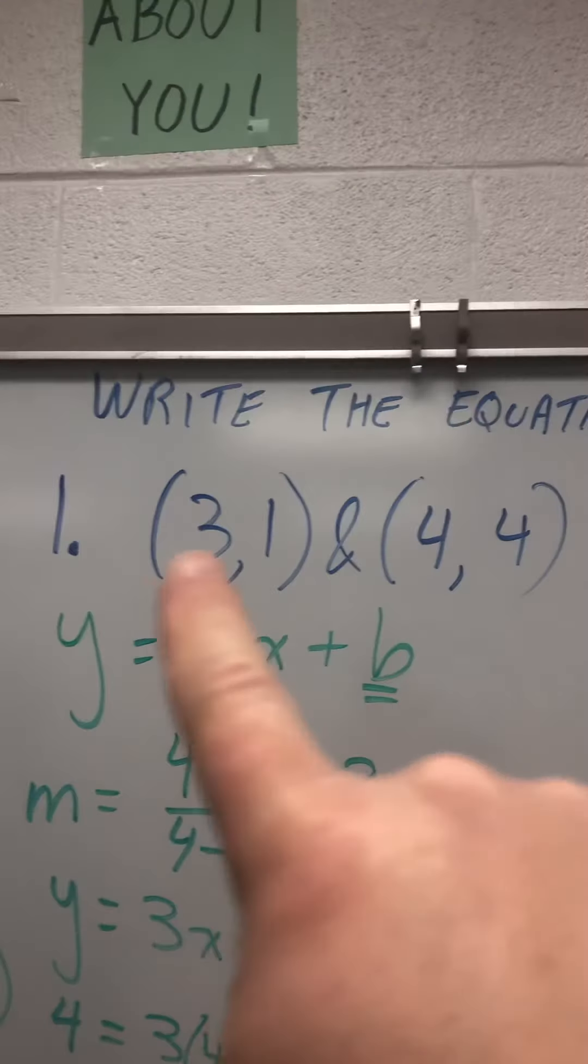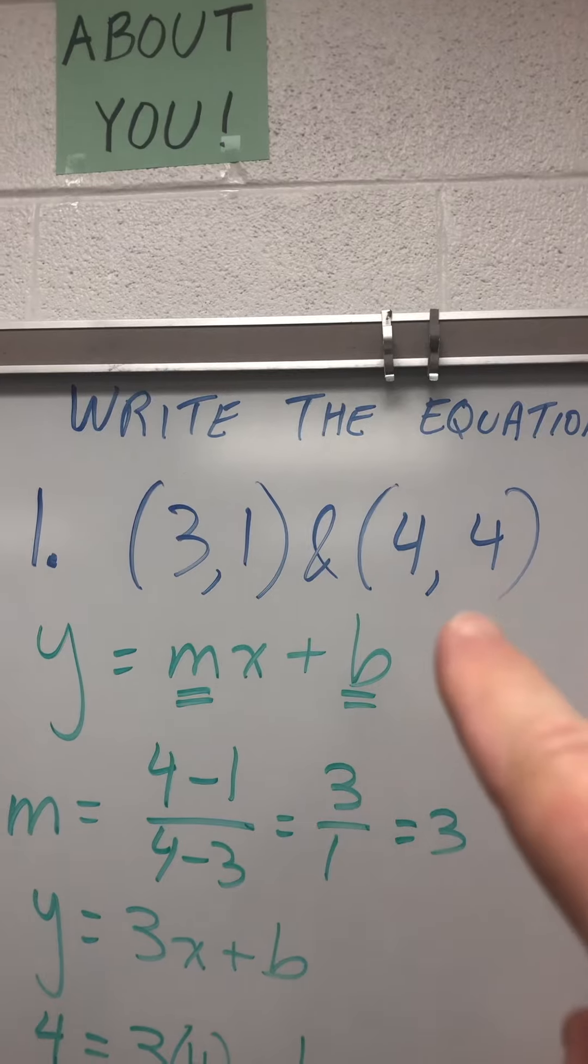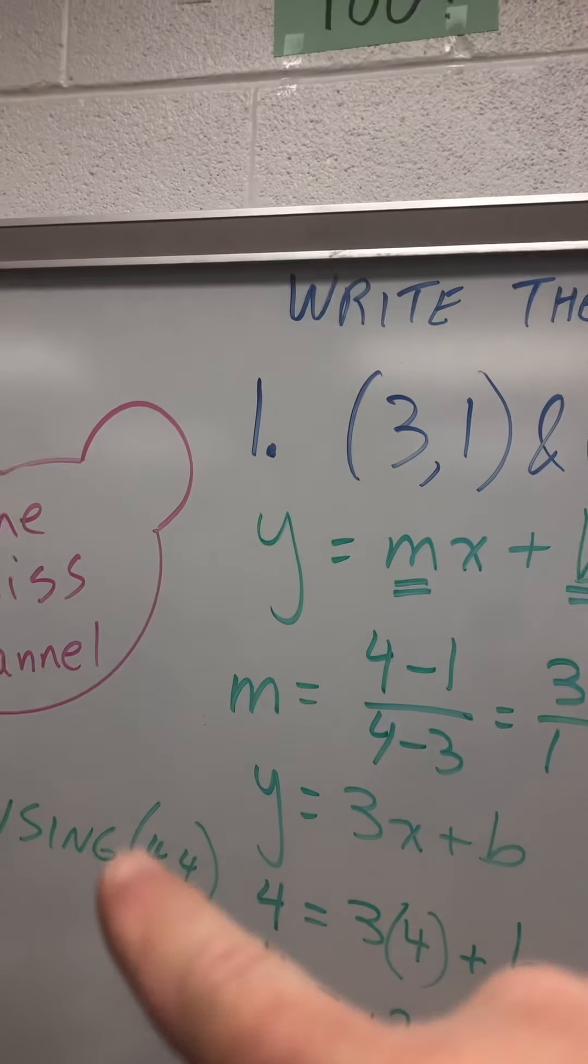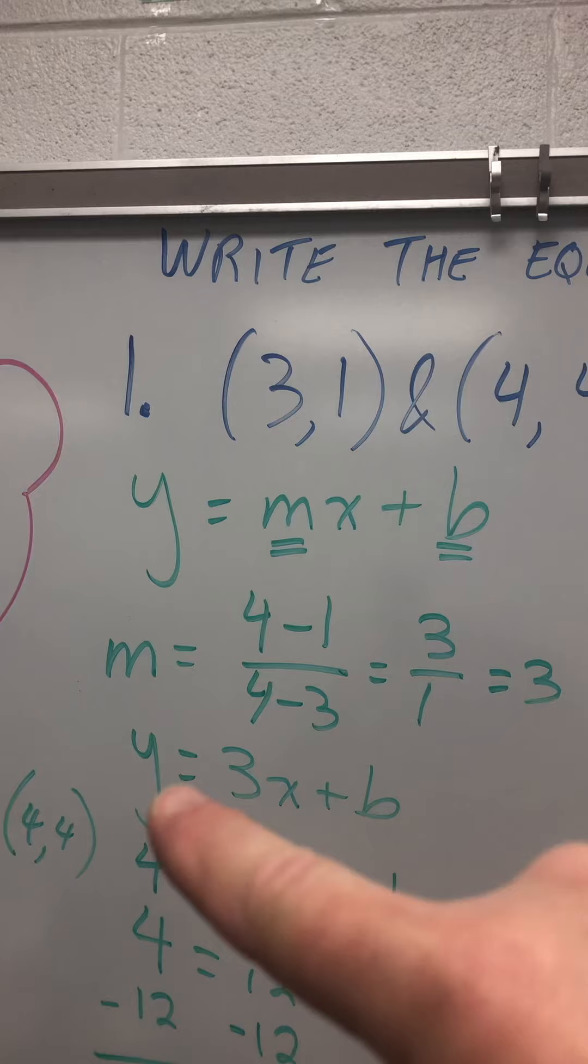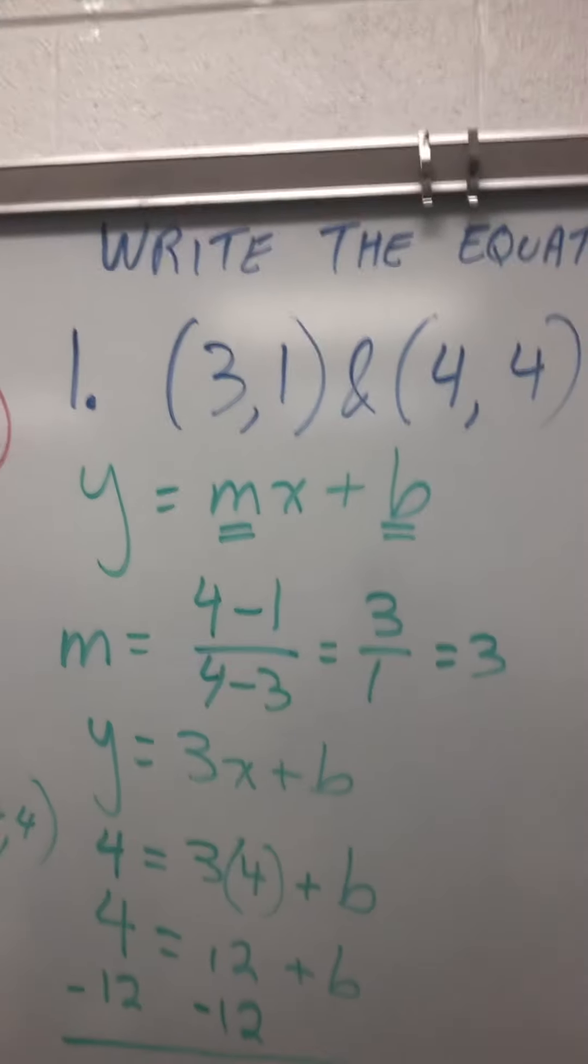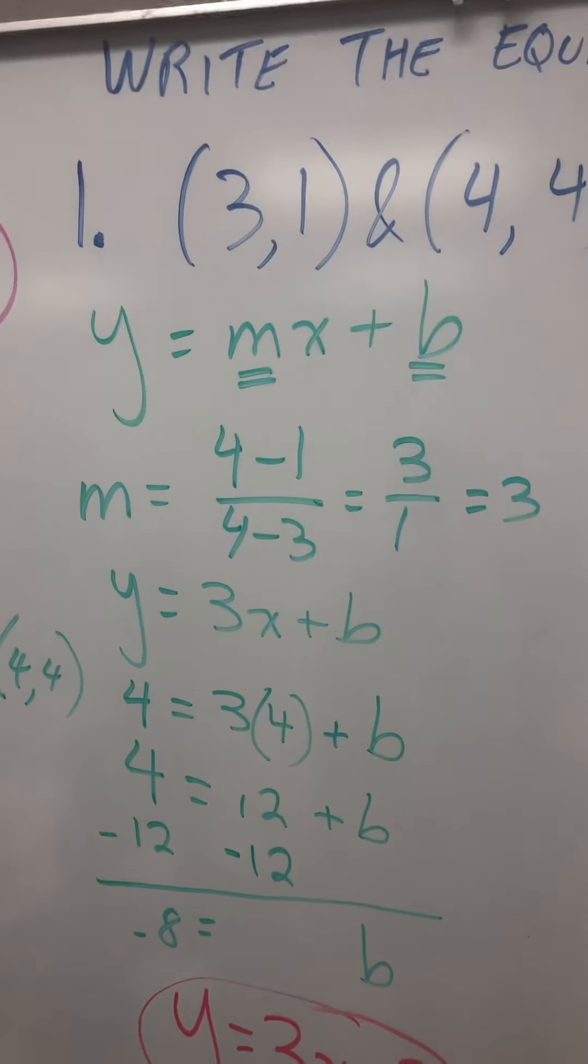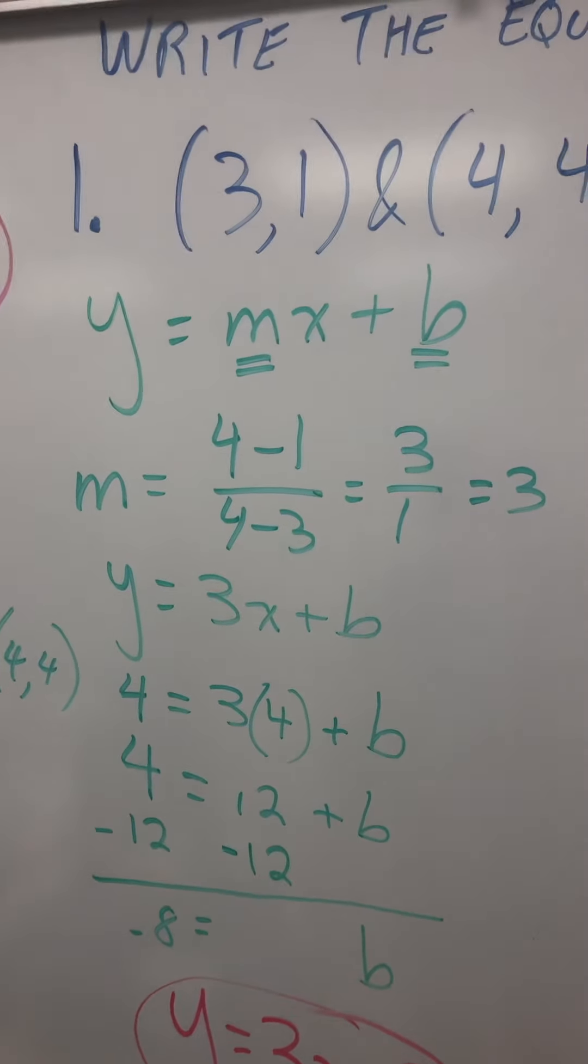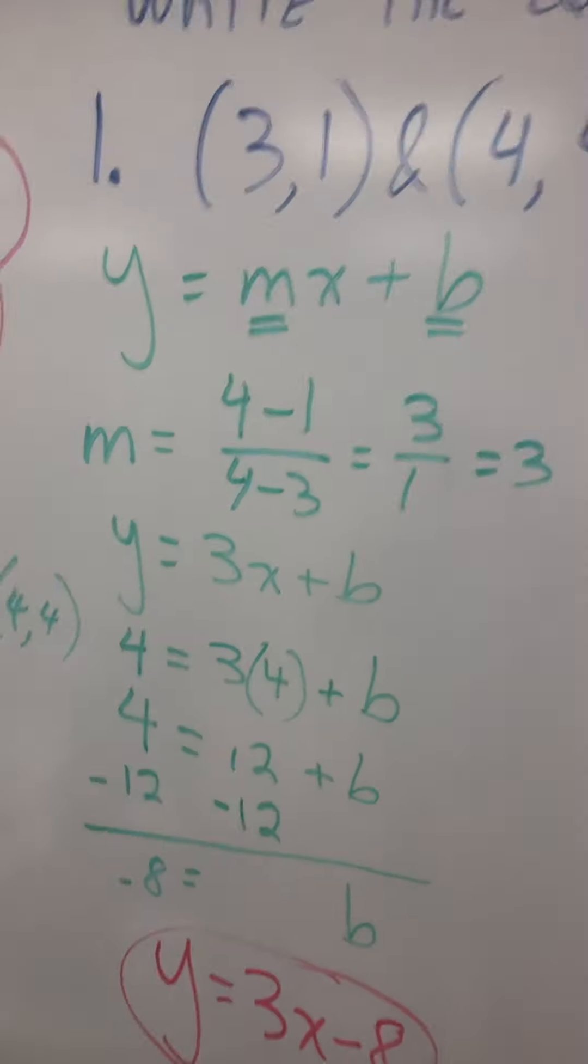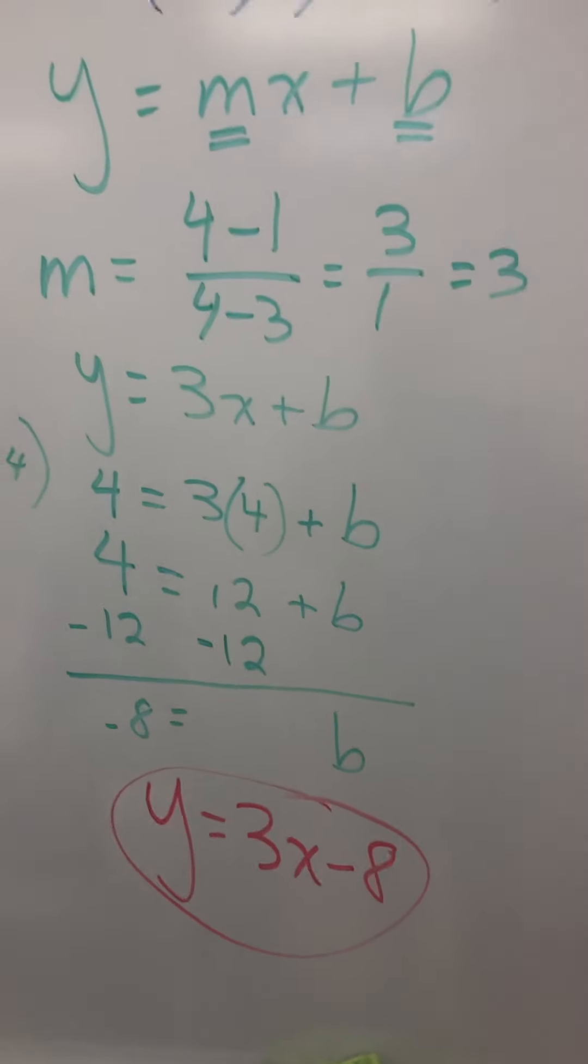Now you pick either point. Doesn't matter which one. If I choose 4, 4, that means I'm going to put 4 in for y and 4 in for x. So I get 4 equals 12 plus b. Subtract 12 from both sides. That's b equals negative 8. So my equation is y equals 3x minus 8. There you go.